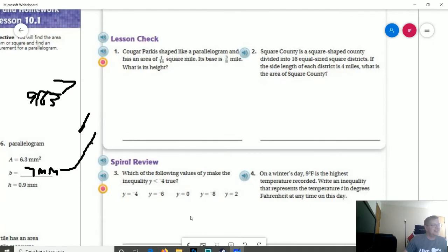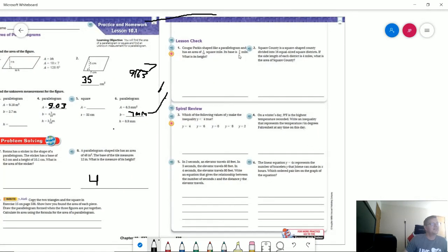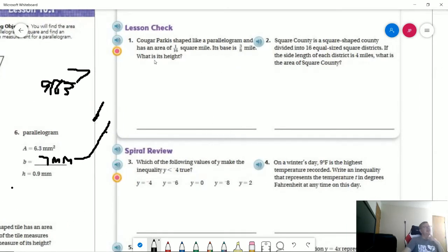You guys get to be the trial run for figuring out this particular app. So number 1, the park is shaped like a parallelogram. It has an area of 1/16 of a mile. The base is 3/8 of a mile. So we would do 1/16 divided by 3/8, and then we are going to multiply. So we are going to be switching these two parts over. That should give us 8/48, which would reduce down to 1/6.